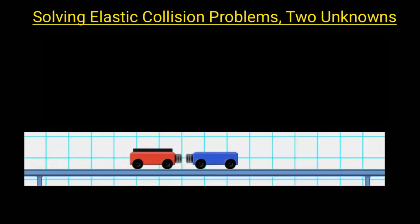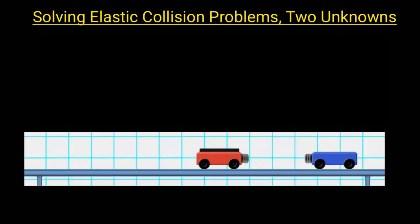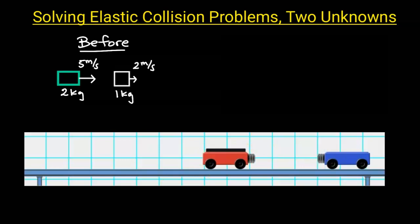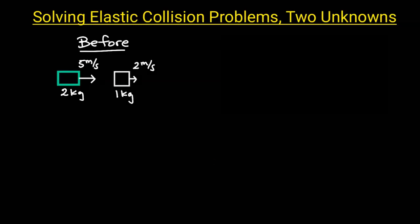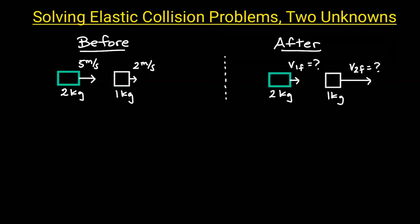In this video I'm going to show you two ways to solve elastic collision problems with two unknown variables. Object one is two kilograms moving to the right at five meters per second. In front of object one is object two, which has a mass of one kilogram and is moving to the right at two meters per second. After object one bumps into object two, what are their velocities? Since there are two unknowns, we're going to need two different equations. In an elastic collision, both momentum and kinetic energy are conserved.